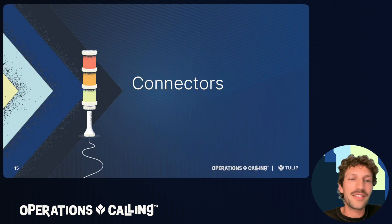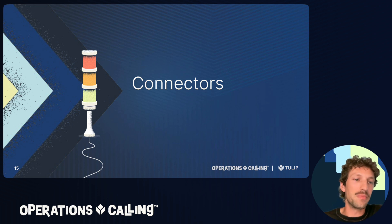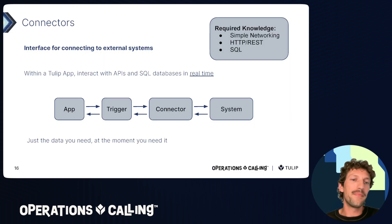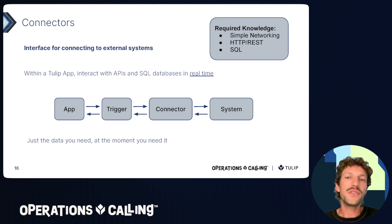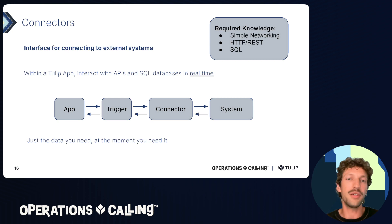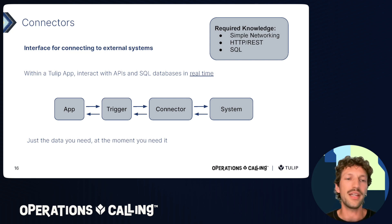Next up is connectors. Connectors are an interface for connecting to external systems. Within a Tulip app, you can interact with APIs and SQL databases in real time. This is a no-code tool, but it requires some specialized knowledge like understanding of basic networking, HTTP, REST, or SQL. The goal of connectors is to get data within an application right when you need it.